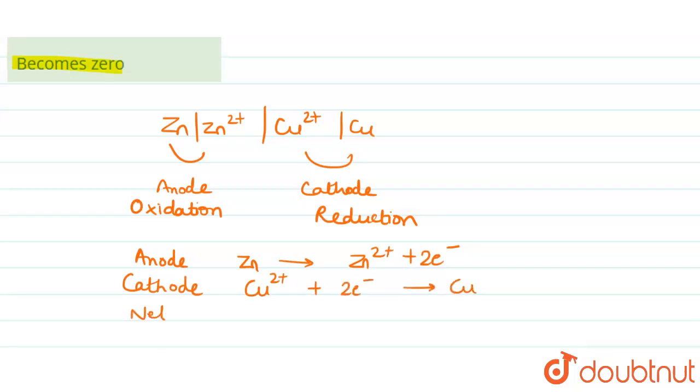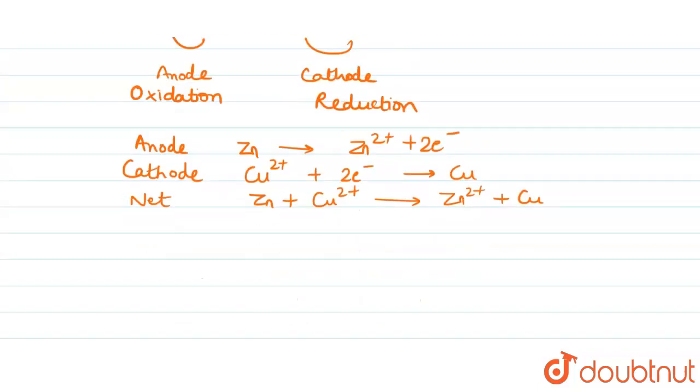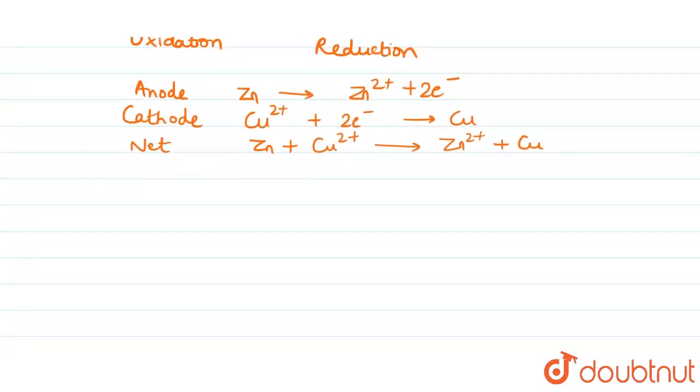So now when we write the net cell reaction we get Zn plus Cu2+ converting into Zn2+ plus Cu. So after we get this, we know this is the reaction.